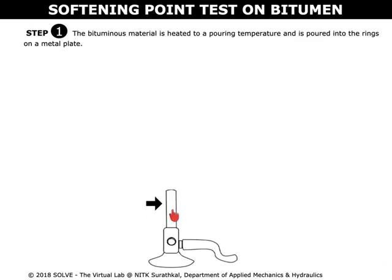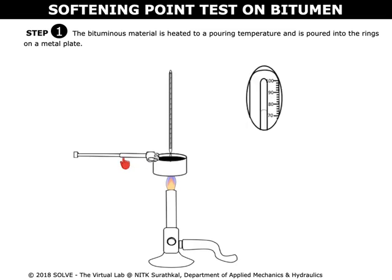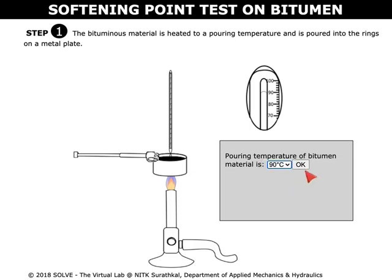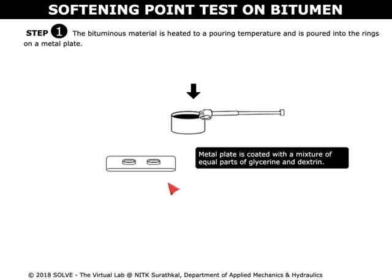Click on the Bunsen burner to heat the sample to a pouring temperature. Select the correct answer to proceed to the next step. Now stop applying the heat.